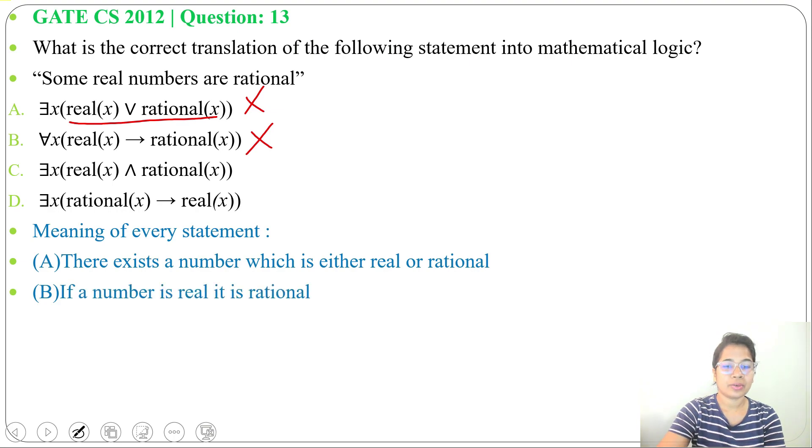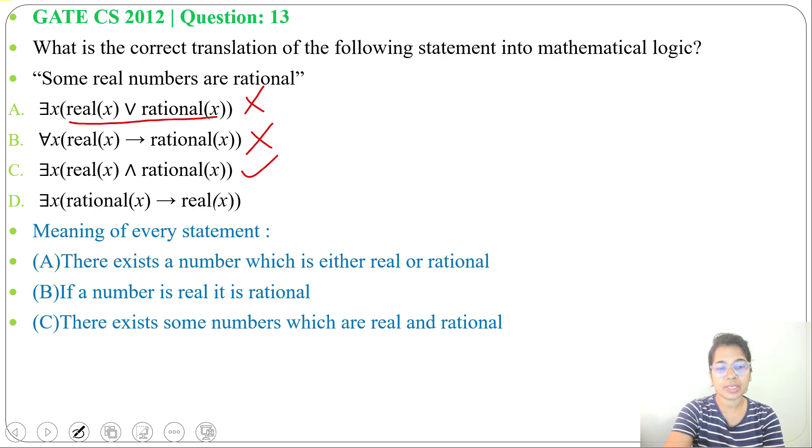Next, option C: there exists x, x is real and x is rational. So it is our answer—some real numbers are rational.